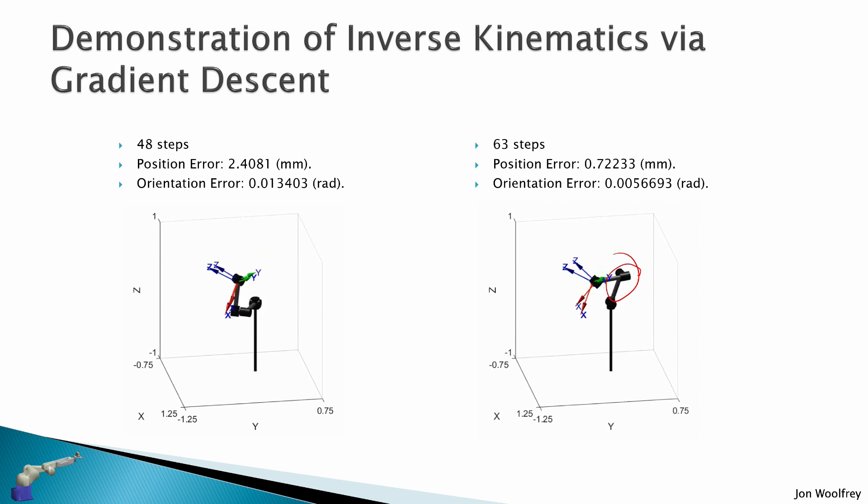So given a different initial guess q0, I've ended up with a different final configuration, and it also has a different pose error. So this would probably be closer to a global minimum, and this would probably be more of a local minimum for this inverse kinematics optimization.